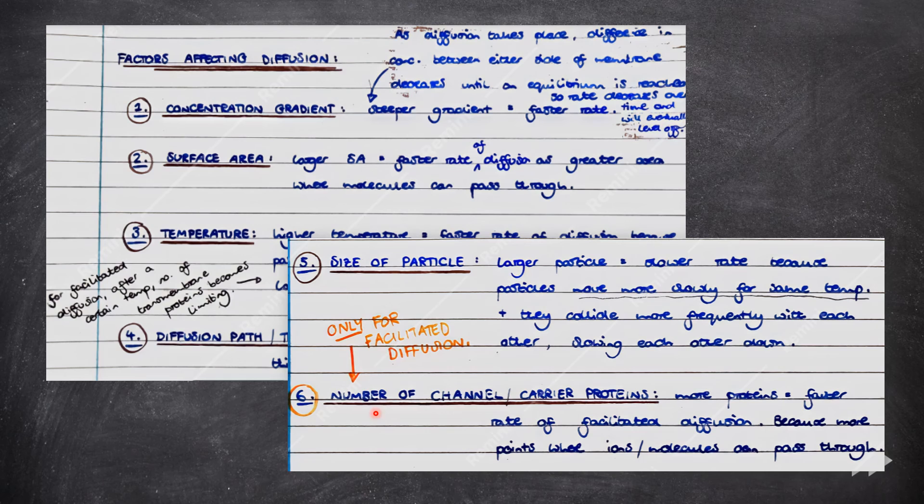Finally, we have the number of channel or carrier proteins, and this only applies to facilitated diffusion. The more proteins there are, the faster the rate of facilitated diffusion, because there are more points where ions or molecules can pass through.